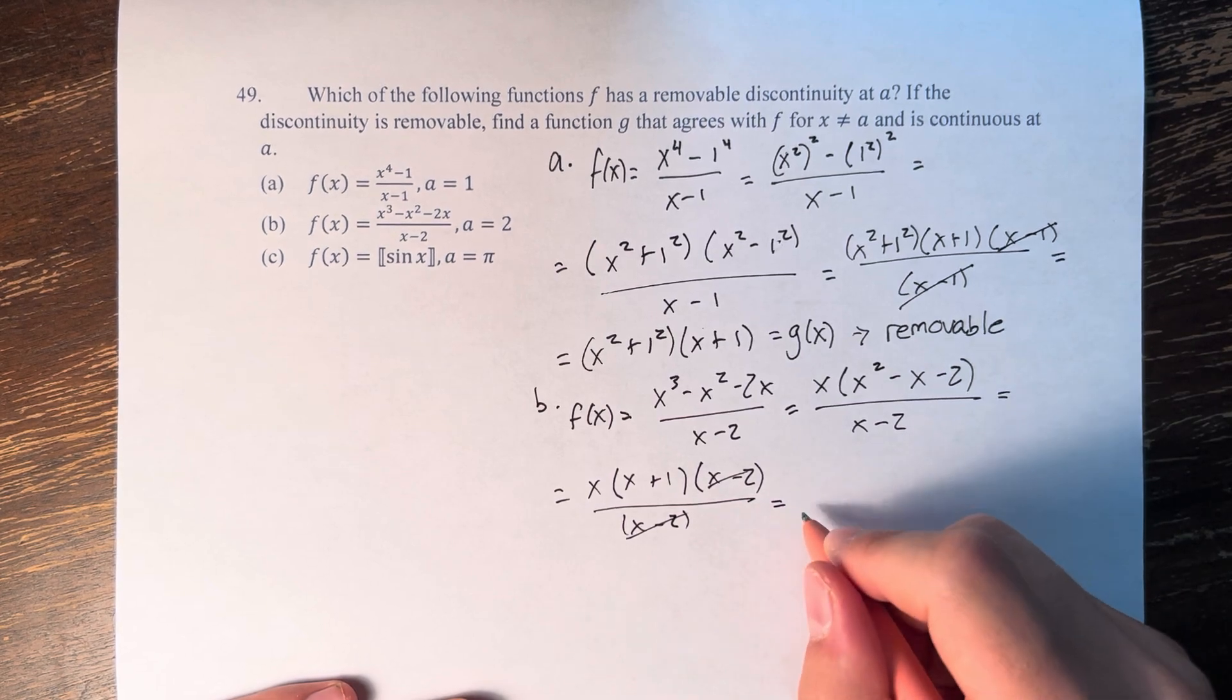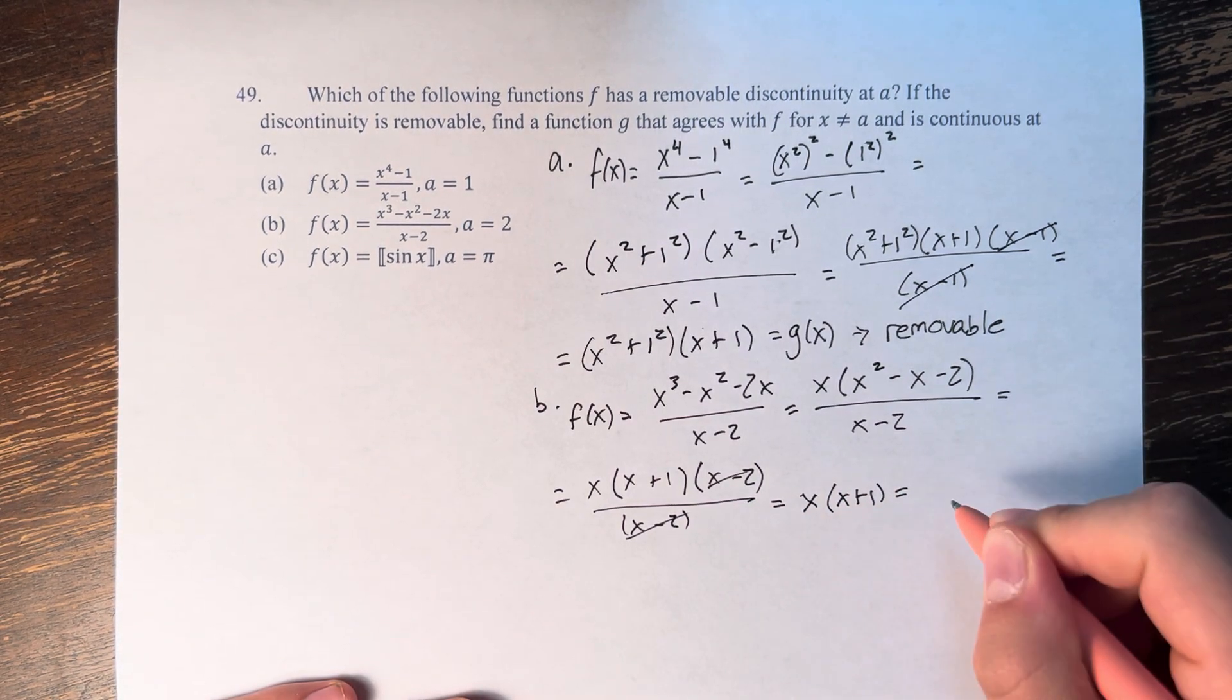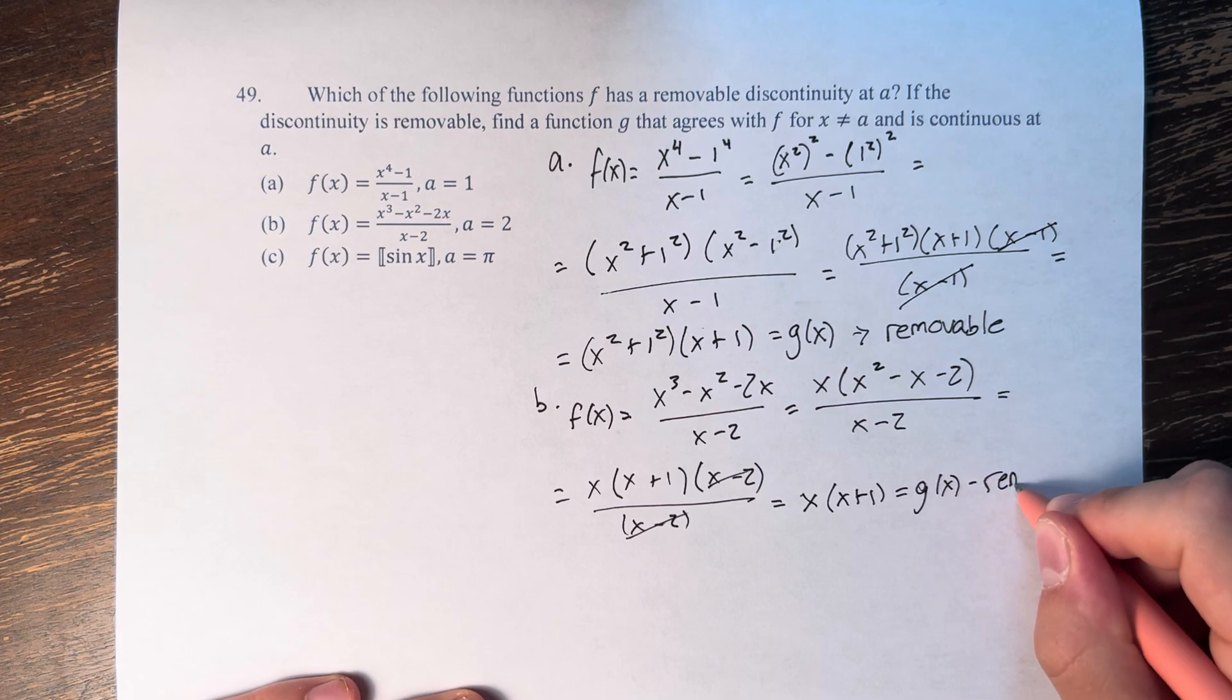This cancels and we get x times x plus 1. This is equal to your g of x. And therefore, once again, it's removable.